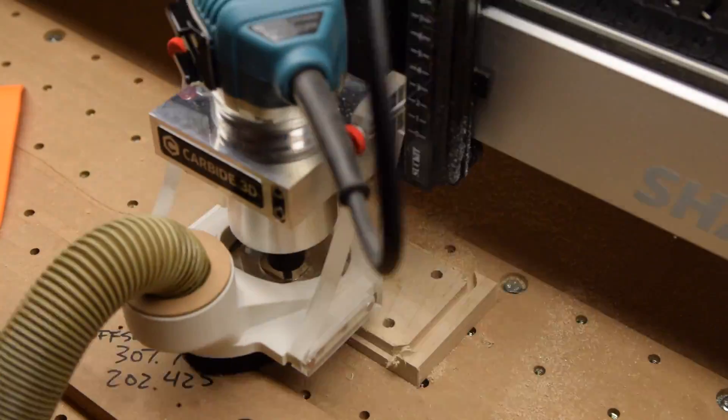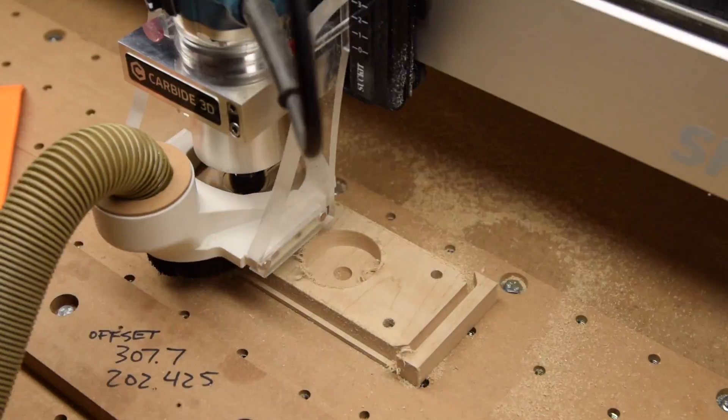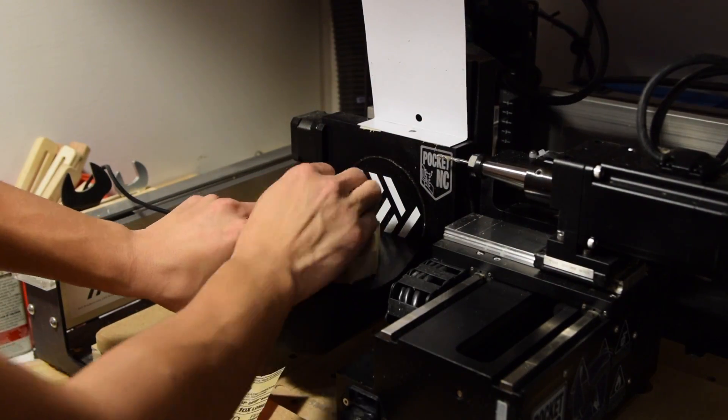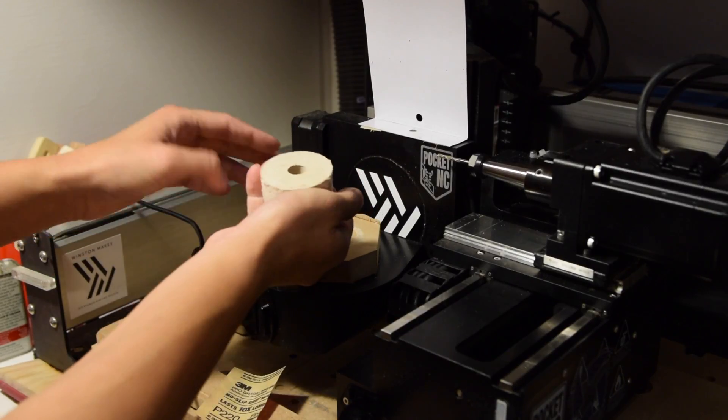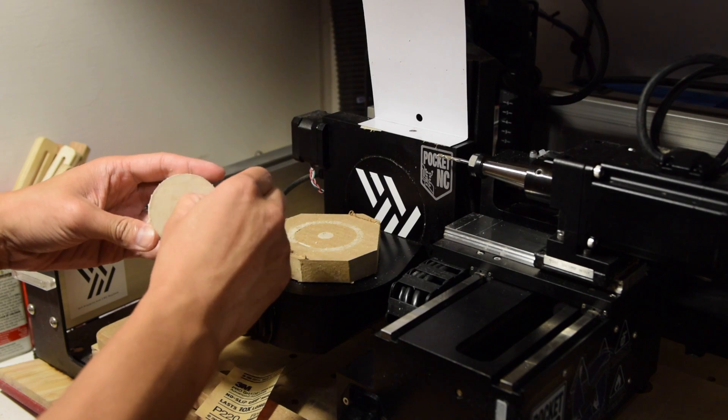It was a couple thou undersized. I created additional toolpaths that were incrementally larger to creep up on a snug fit with a Pocket NC machine tool fixture. Which, by the way, was also not 2.000 inches in diameter. It was a couple thou oversized. Both classic symptoms of deflection in climb milling applications.